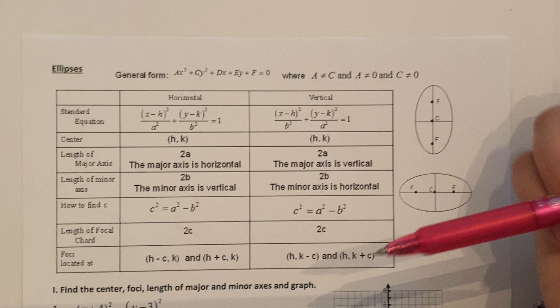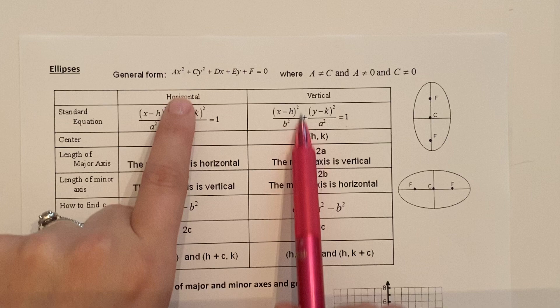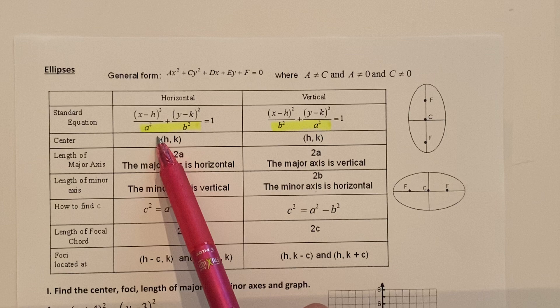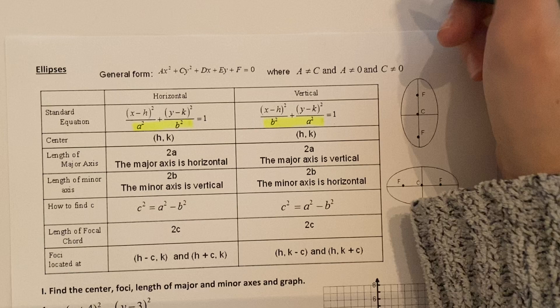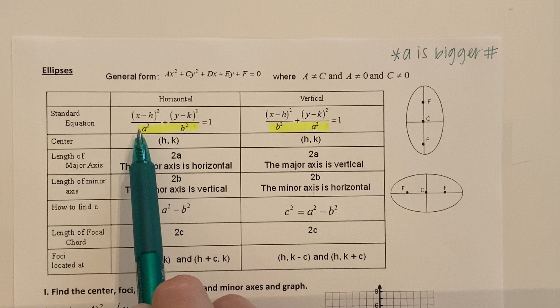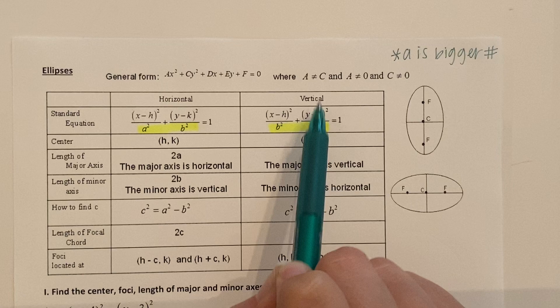Now you'll notice the difference in the horizontal and vertical equations is where A and B are. In the horizontal equation A comes first, but in the vertical B comes first. So what you need to make note of is the fact that A is always the bigger number. So if the bigger number is under the X value that's horizontal. If the bigger number is under the Y value that's vertical and that makes sense graphically.